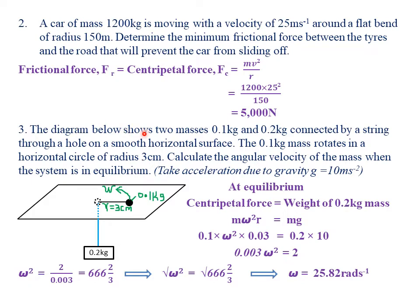Our third example: two masses, 0.1 kg and 0.2 kg, are connected by a string through a hole on a smooth horizontal surface. The 0.1 kg mass rotates in a horizontal circle of radius 3 centimeters. Because the surface is smooth, we do not consider friction. The 0.1 kg mass is in horizontal motion, so we will not consider weight in the working. Calculate the angular velocity when the system is in equilibrium, taking g = 10 m/s².